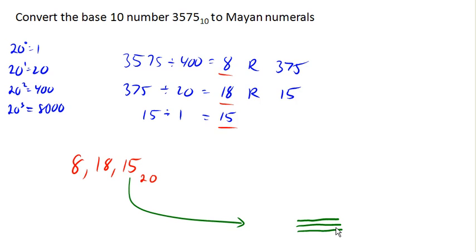So then 18 is in our next place value up. So we're gonna leave some space and then draw an 18. So 18 is 5, 10, 15, 16, 17, 18. So there is our 20s place.